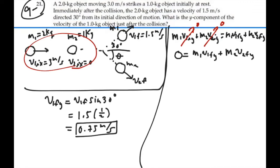Well, we just figured out v1 final in the y direction. So solving this for v2 final in the y direction, we have v2 final in the y direction will equal a negative mass 1 v1 final in the y direction divided by mass 2. This will be a negative 2 times v1 final in the y direction, 0.75, divided by mass 2, which is 1. This will be a negative 1.5 meters per second.